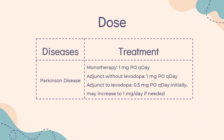Dose — Parkinson's disease. Monotherapy: 1 mg PO once daily. Adjunct without levodopa: 1 mg PO once daily. Adjunct to levodopa: 0.5 mg PO once daily initially, may increase to 1 mg per day if needed and tolerated; consider reducing levodopa dose.